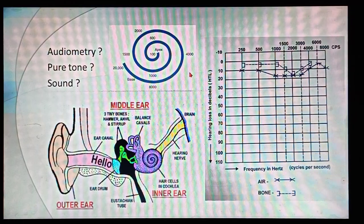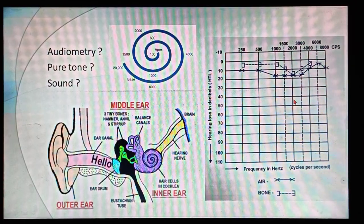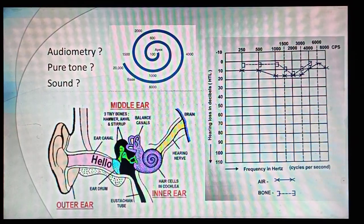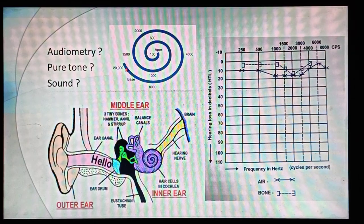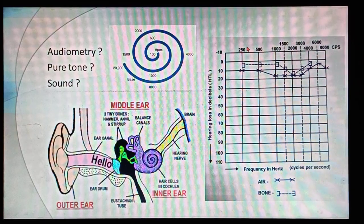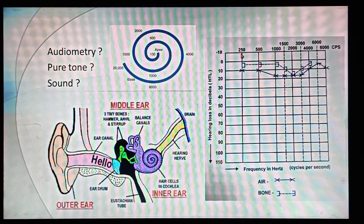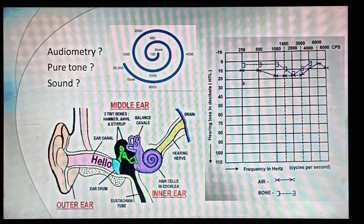What is a pure tone? In our day-to-day life we hear many sounds, and all these sounds have a mixture of varying patterns of different intensities as well as different frequencies. A pure tone has only a single frequency — if I give a pure tone at 250 Hz, that tone will have only 250 Hz frequency. This 250 Hz sound can be given at 0 dB intensity or 10 dB intensity — intensity is nothing but loudness.